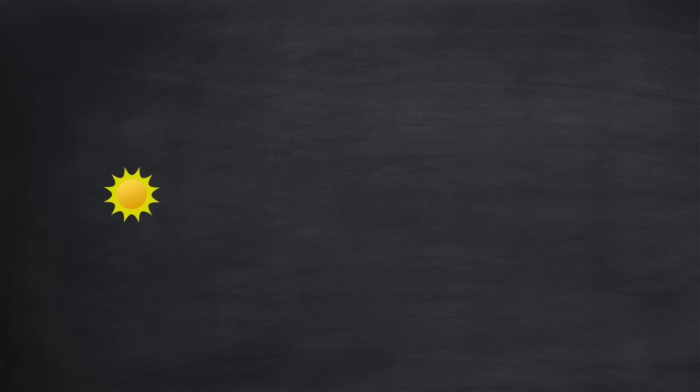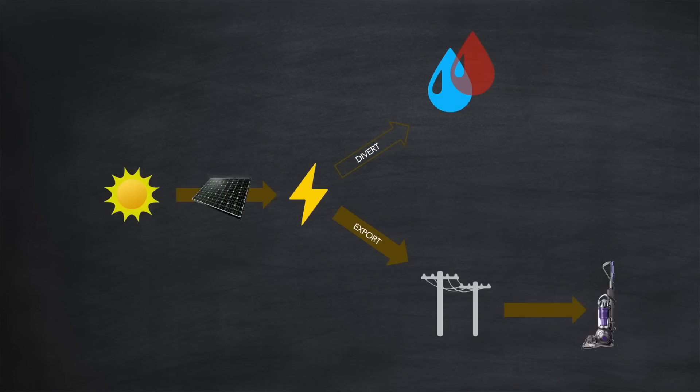Let's assume your solar installation is generating excess solar energy. You have a choice. You can divert that energy to a solar diverter and heat the water in your cylinder. Or you can export it. If you choose to export, someone, most likely a neighbour, can immediately make use of that energy in their home. For example, with a vacuum cleaner.